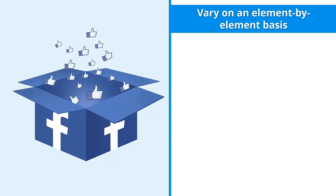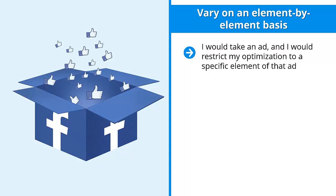Vary on an element-by-element basis. Take an ad and restrict your optimization to a specific element. Every ad has many elements: the graphics, the heading, the description, the link. Start with one element and come up with different versions of it.